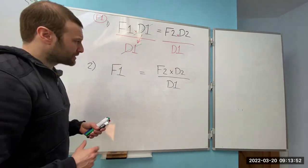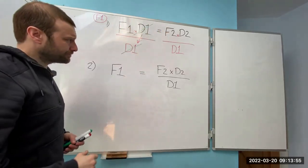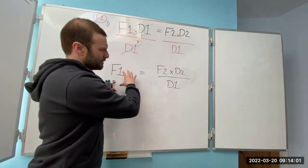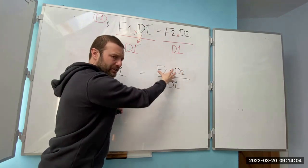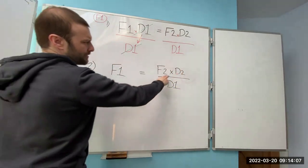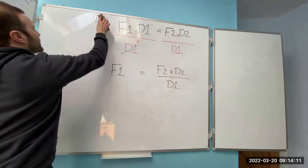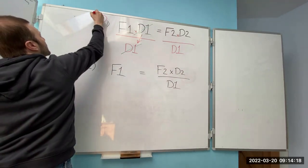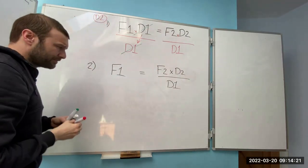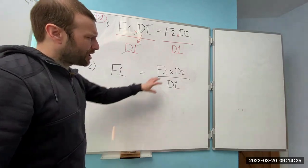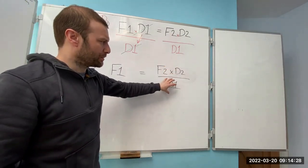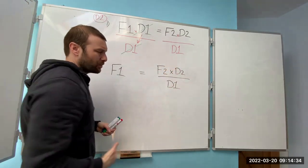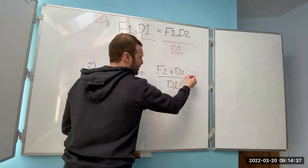Once you've done that a few times and chosen different things off the top line and divided them out, I then want you to move on to the next step: choosing something from the top line when you've got a fraction. So let's say we want to find Distance 2. I can't get to that until I've dealt with D1, because at the moment it's a fraction — I'm dividing by D1.